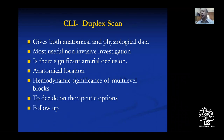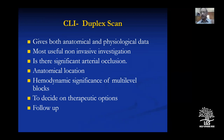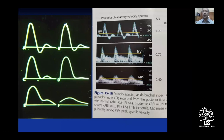The duplex scan is the most useful non-invasive test. It identifies significant arterial occlusion and anatomical location, assesses hemodynamic significance of multi-level blocks — at thigh, femoral, popliteal, and tibial levels — and helps design the therapeutic option. Most importantly, after intervention it allows non-invasive follow-up by simply performing a duplex scan and ankle-brachial index.